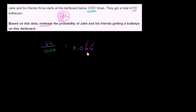And the general idea here is maybe they got lucky this time, or maybe they got unlucky. In fact, there's some probability that even if the probability is very low of hitting the bullseye, that they just got super, super, super lucky this time. So you don't know that this is the exact probability of Jake and his friends hitting the dartboard. This is just based on your sample. You've done the experiment 1,000 times, and you got 66 successes.